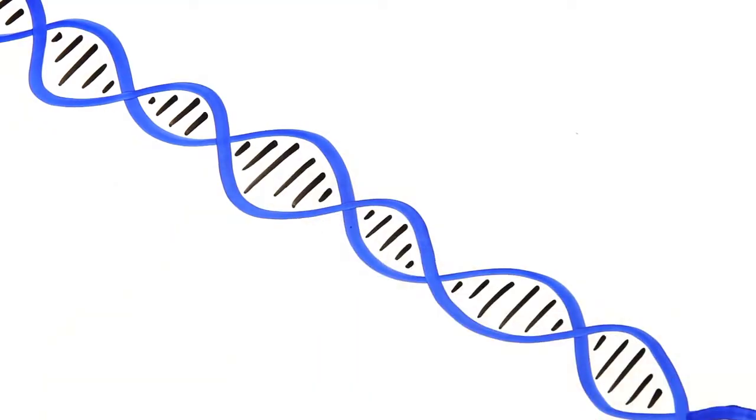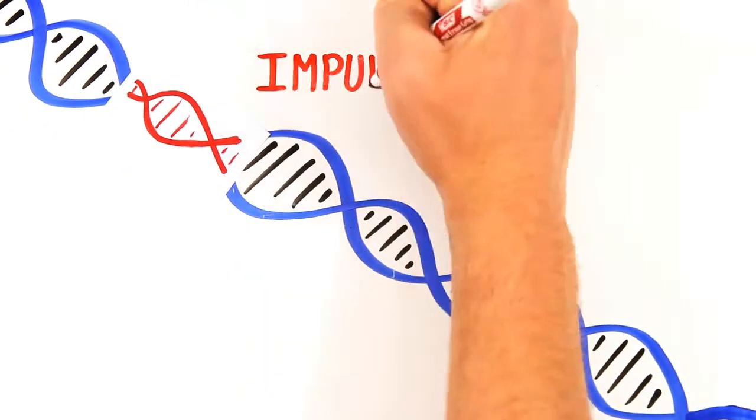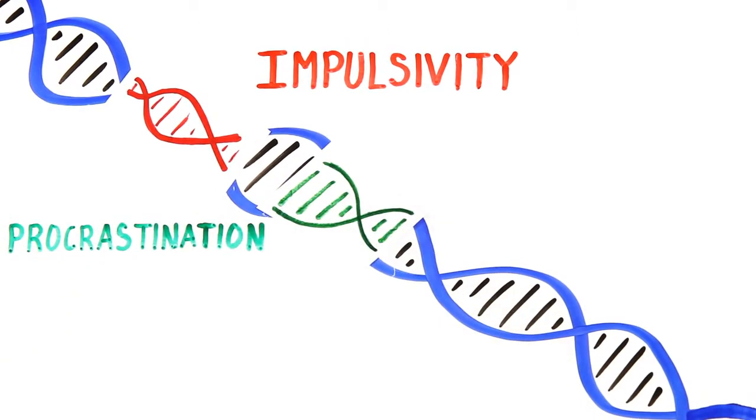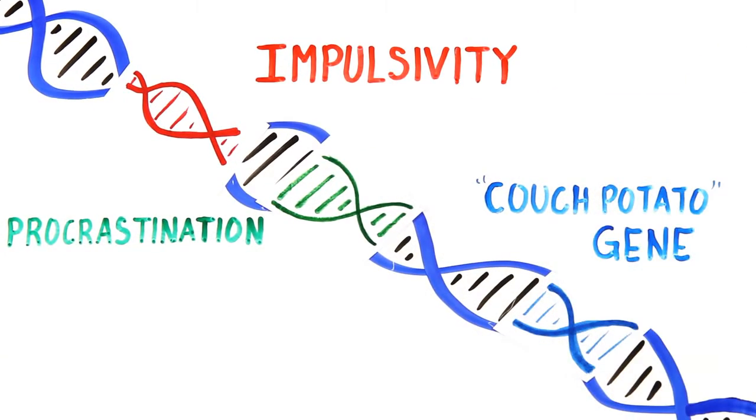We also inherit genes responsible for our other traits, from impulsivity to procrastination to work ethic and straight up laziness. And it turns out, our physical laziness may be linked to a couch potato gene.